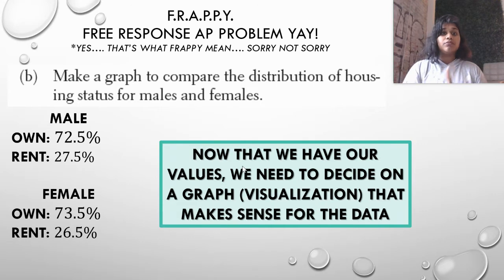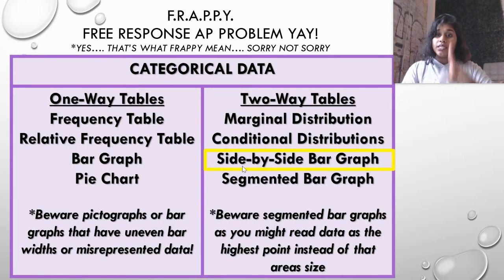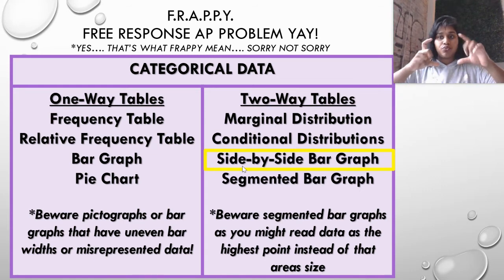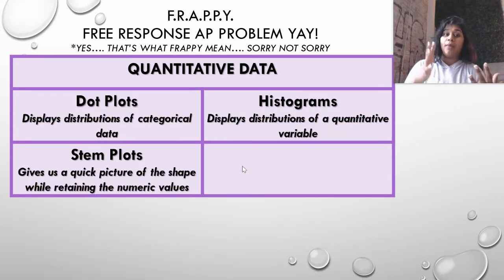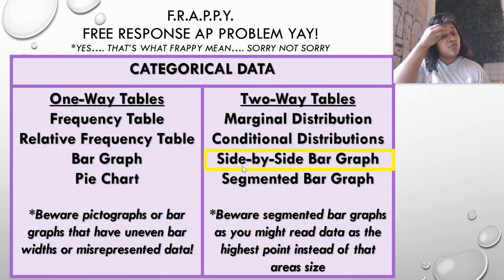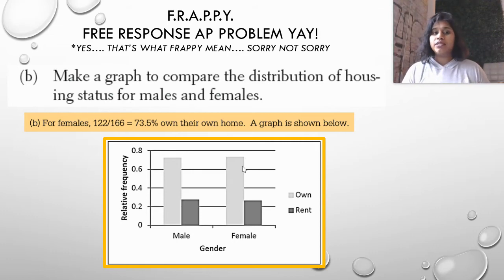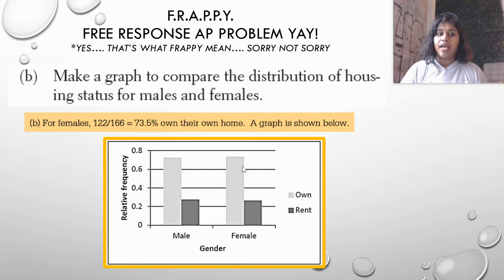Categorical data has visualizations like bar graphs, and today we're using a side-by-side bar graph because we have a two-way table. You could use segmented bar graphs, but beware — you might read the highest point instead of the size of each area, which can get confusing. Quantitative data uses dot plots, stem plots, and histograms, but here we use a side-by-side bar graph, separating males and females, with the light bar as 'owned' and the dark bar as 'rent.'